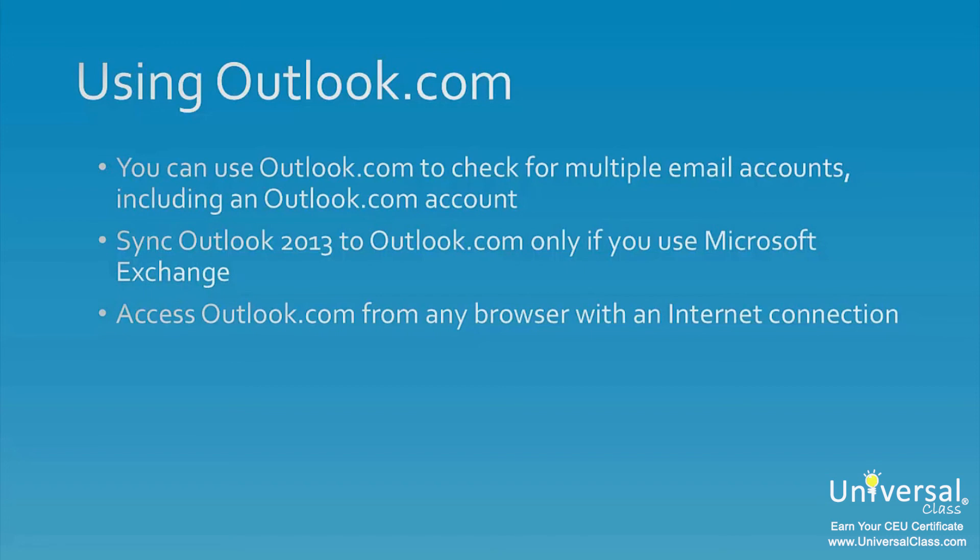You can access Outlook.com from any web browser as long as you have an internet connection. To set up an Outlook.com account, go to www.outlook.com and click the Sign Up Now link at the bottom of the page. If you have a Microsoft Live, Windows Phone or Xbox Live account, you can simply log in without creating an account.